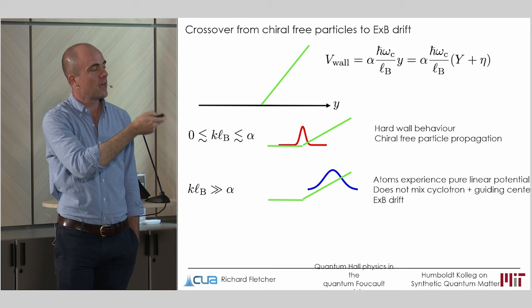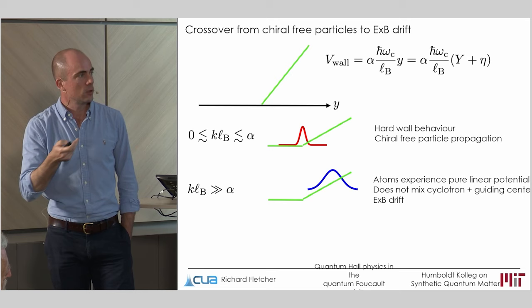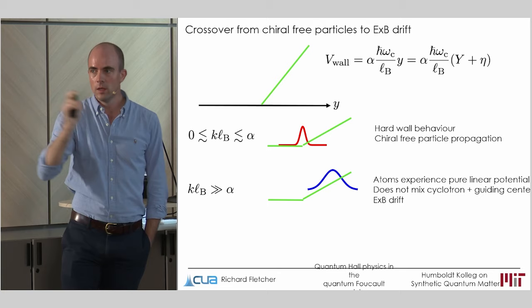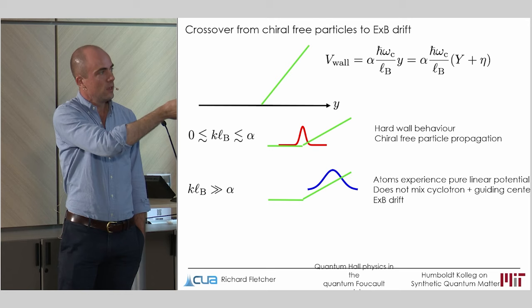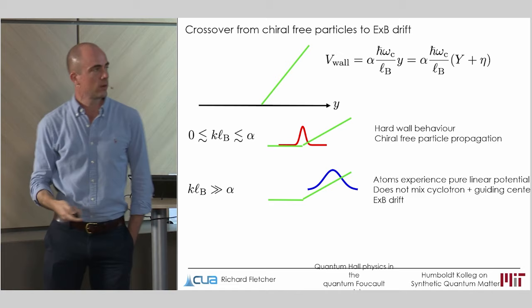So you'll recover E cross B drift. And so this was really surprising. We sort of felt as experimentalists, hey, once you've made a steep wall, life's good. This is essentially infinitely sharp. That's absolutely not true. You can always find a large enough k that you will recover E cross B drift, and your splitting between edge bands will go back to being cyclotron frequency.